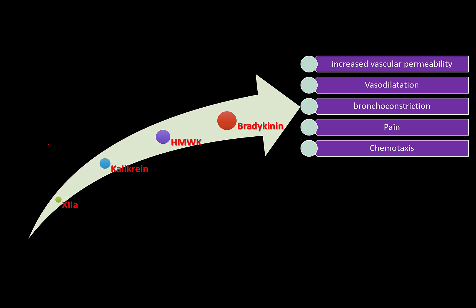These are the inflammatory changes that are set in by bradykinin. In short, this is how the bradykinin kallikrein-kinin system works, how bradykinin is formed, and how it causes inflammation. Thank you everyone.